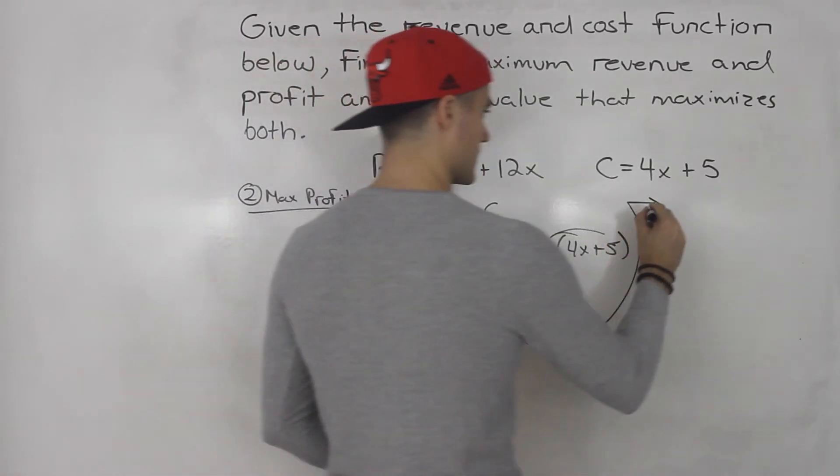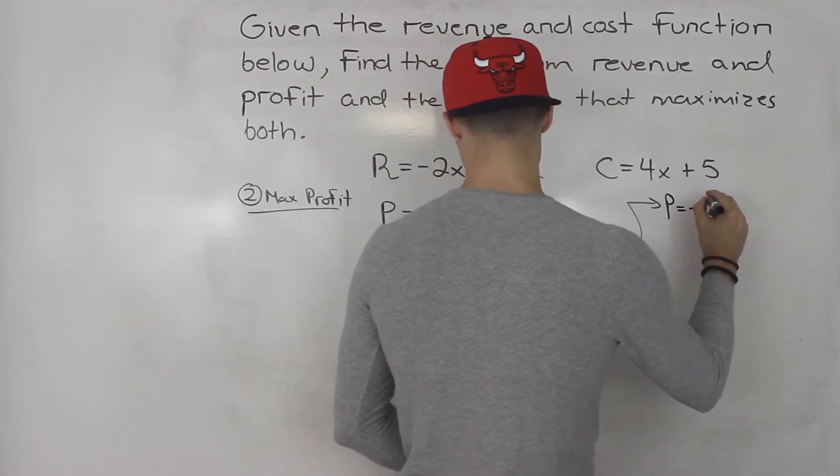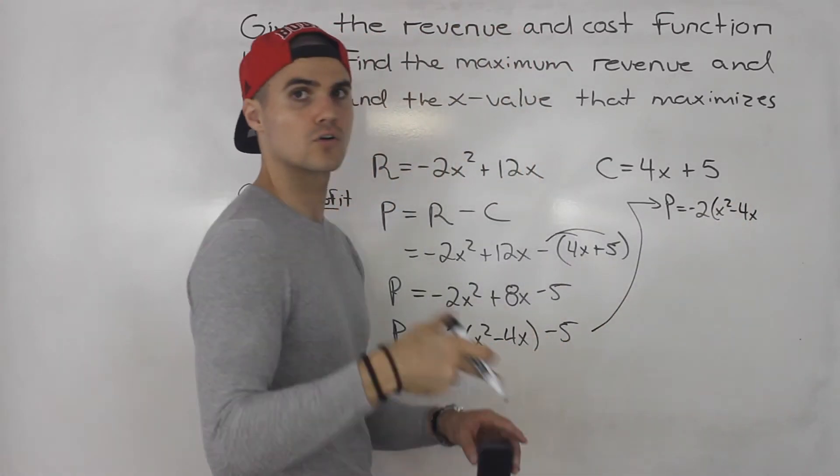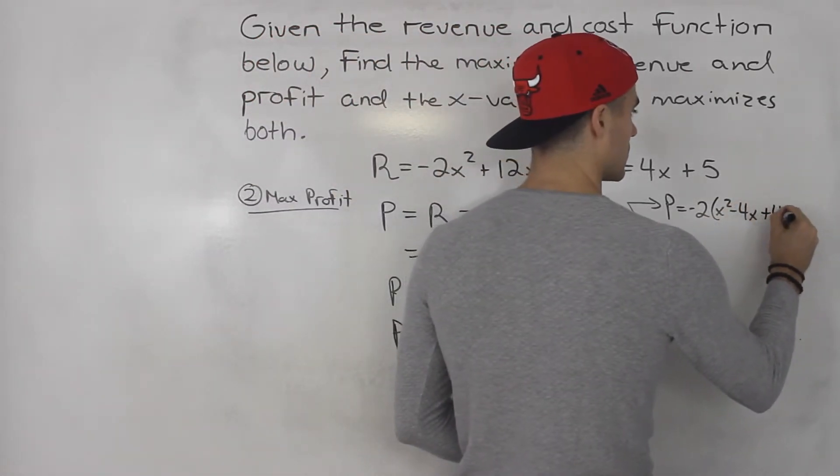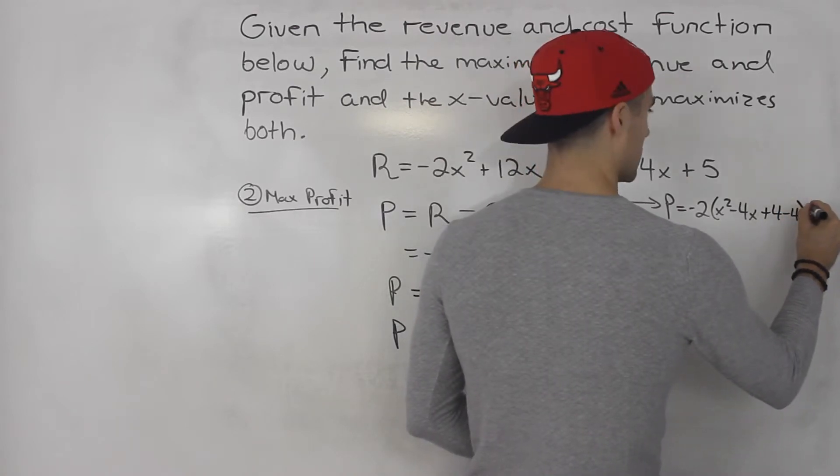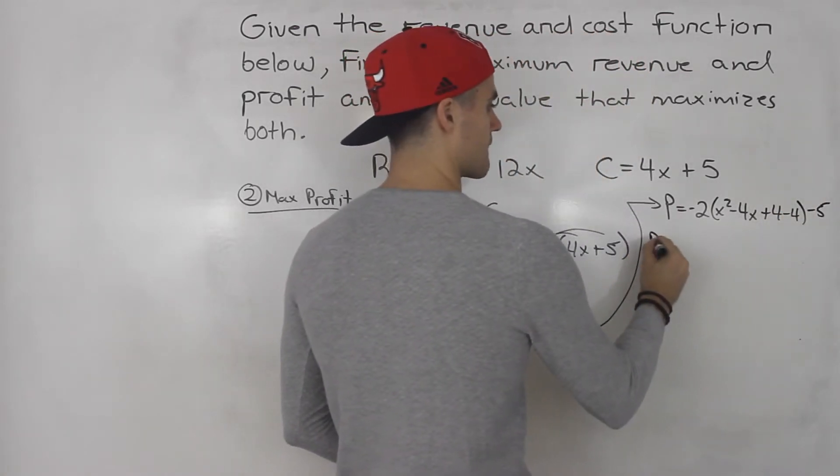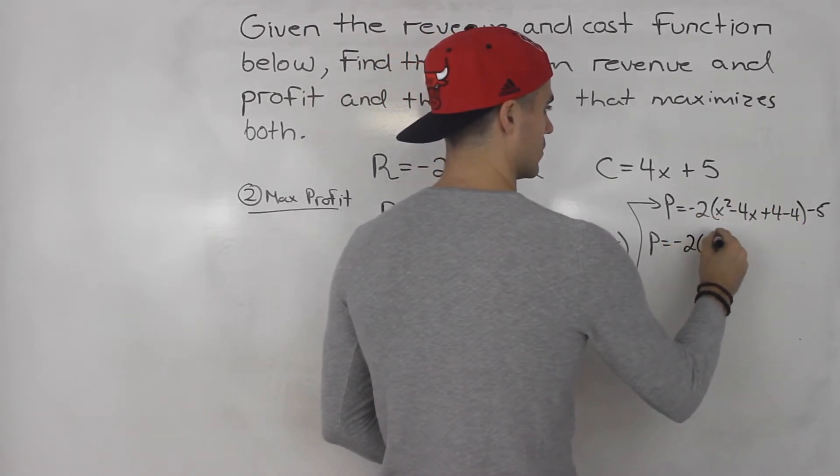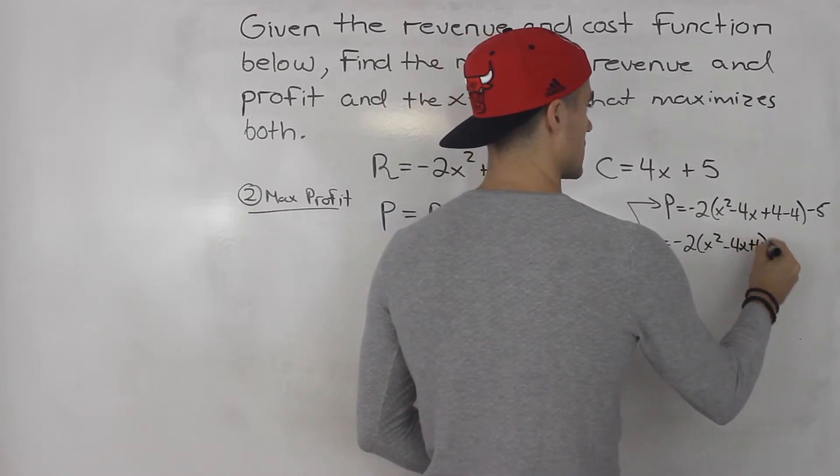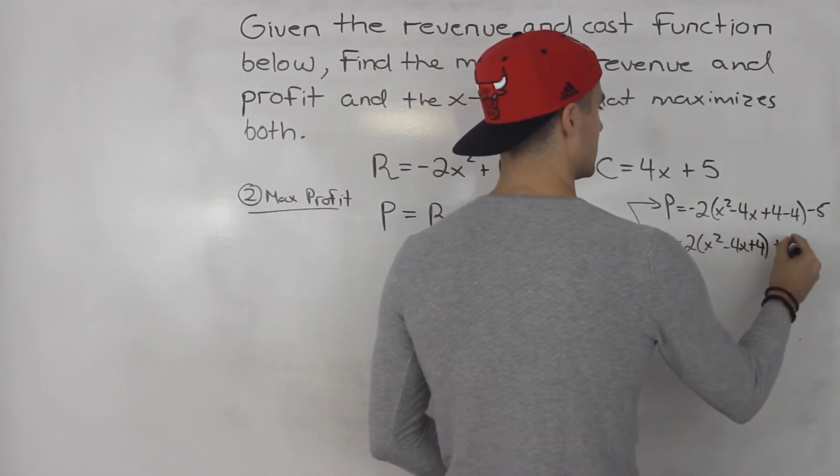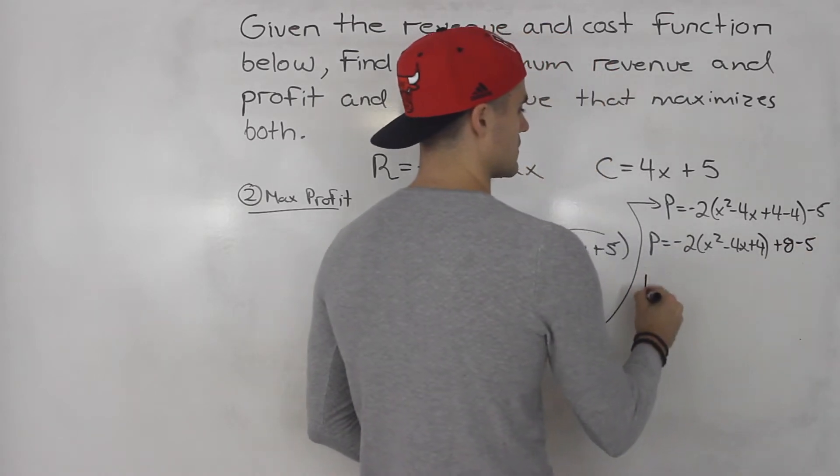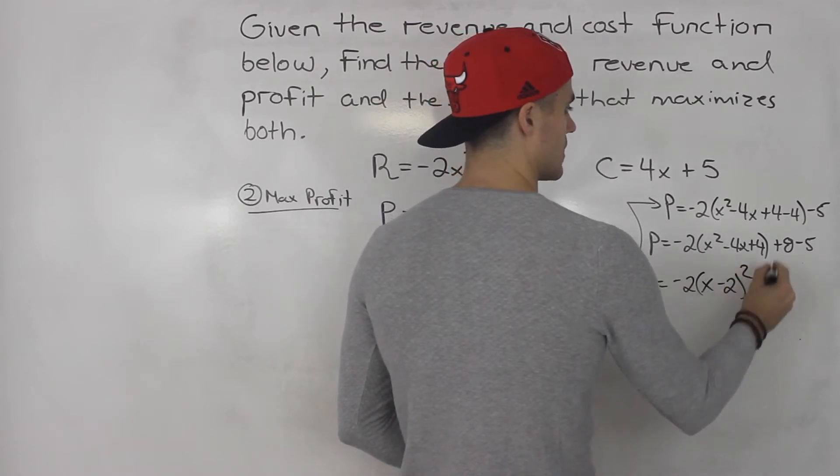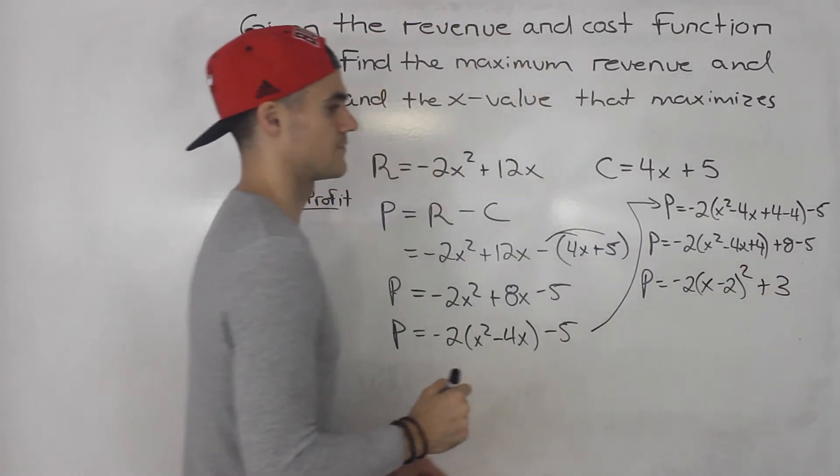Continuing this up here, profit equals negative 2 times x squared minus 4x. We would take half of negative 4, square it, which would give us positive 4 minus 4, minus 5. Then take out the negative 4, which would give us positive 8. This would be minus 5. So this here factors into x minus 2 squared, and this is positive 3.